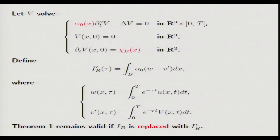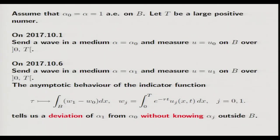Another application: here we show that sometimes we don't need the detail of alpha. Let us solve with alpha equals 1 and the same initial data — the free space case — and define another indicator function I'(τ) = W minus V', where W is the original observation data and V' is the simulated observation data in free space. Then the theorem remains valid if I(τ) is replaced with I'(τ), and V is replaced with the free space solution V'.